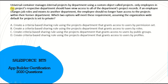The next question: Universal Container manages internal projects by department using a custom object called Project. Only employees in the project's respective department should have access to all department project records. If an employee changes job roles and moves departments, they should no longer have access to the former department's projects. The OWD default for the Project object is set to Private, and the options are criteria-based sharing rules — we need to determine whether to use roles, public groups, permission sets, or profiles.